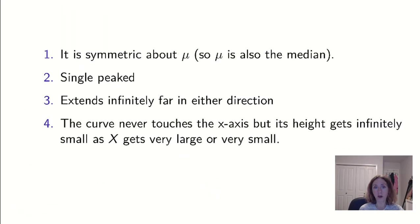The properties that these all have in common: it's symmetric about the mean, symmetric about mu. For a symmetric distribution, the median is also the same thing as the mean because there's an equal amount of stuff above and below. It's single peaked. We had exactly one top to it. It extends infinitely far in either direction. So this falls under the 'all models are wrong, some are useful.'